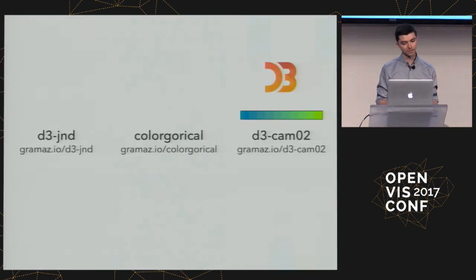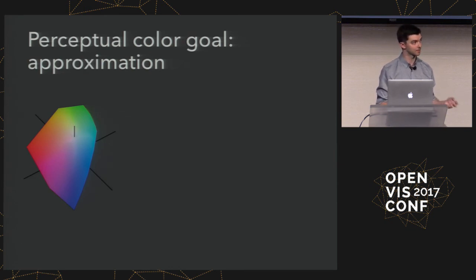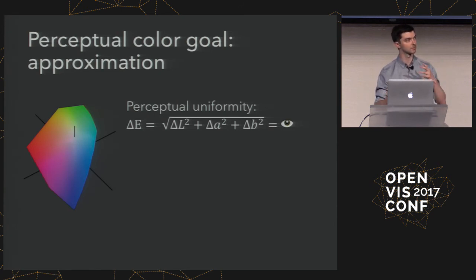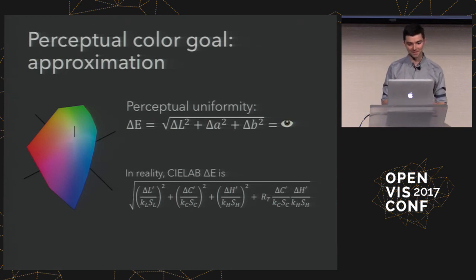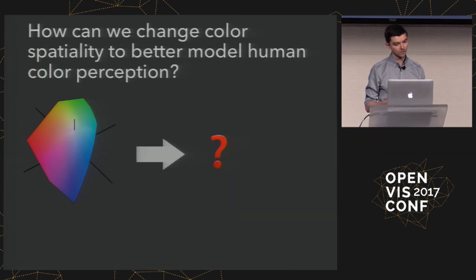Briefly touching on the other D3 module I wrote, implementing a new color space called CAMO2. When talking about color spaces from a color science perspective, we're really talking about approximation — effectively approximating how we perceive colors. CIE lab space assumes the space should effectively model how our human eyes see color, so Euclidean distance should roughly map to the distance that happens in our head. Unfortunately, that's not entirely true, making the equation a bit more complicated.